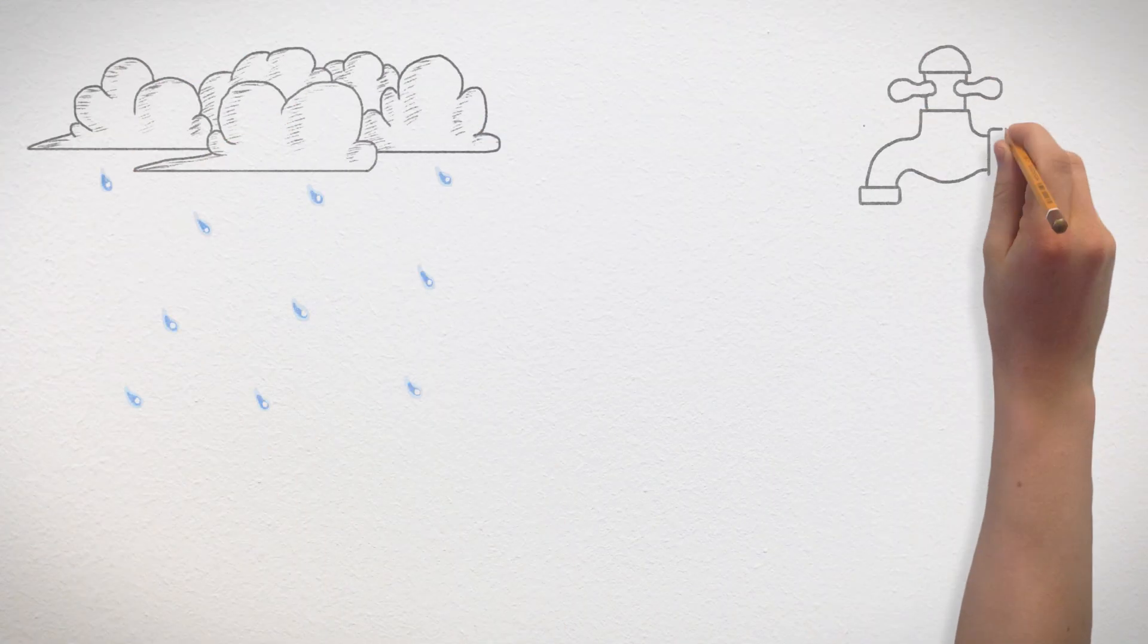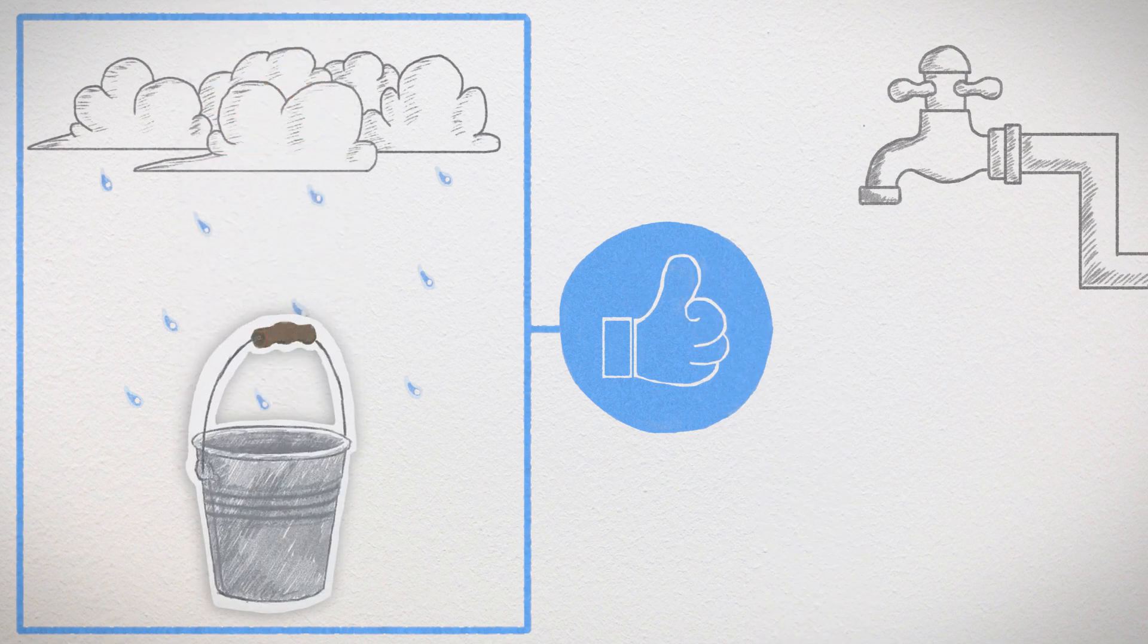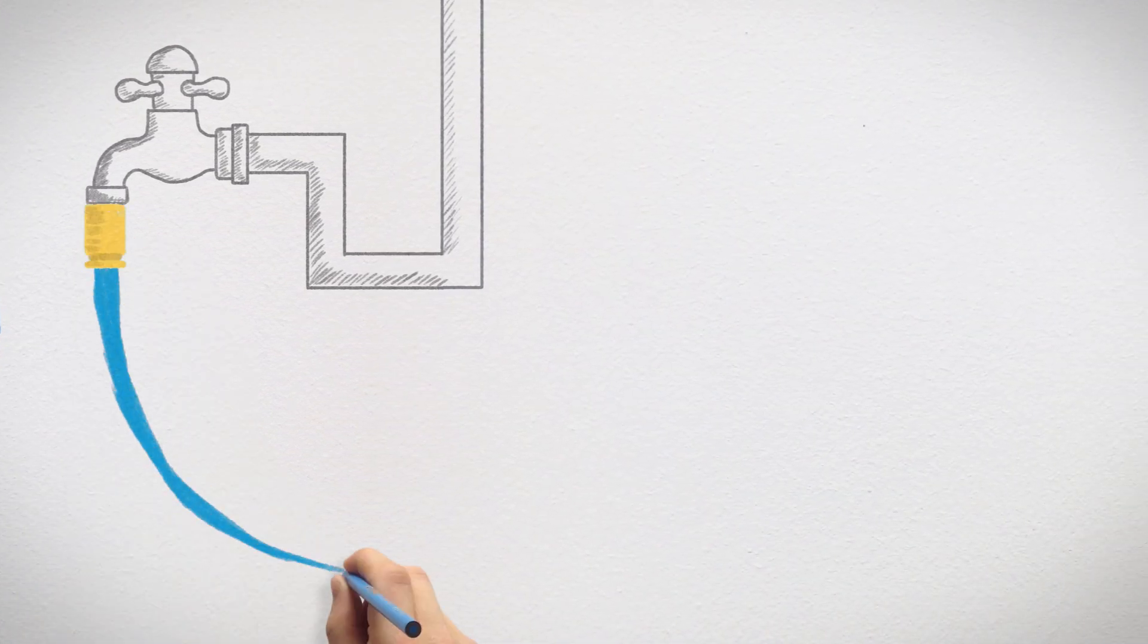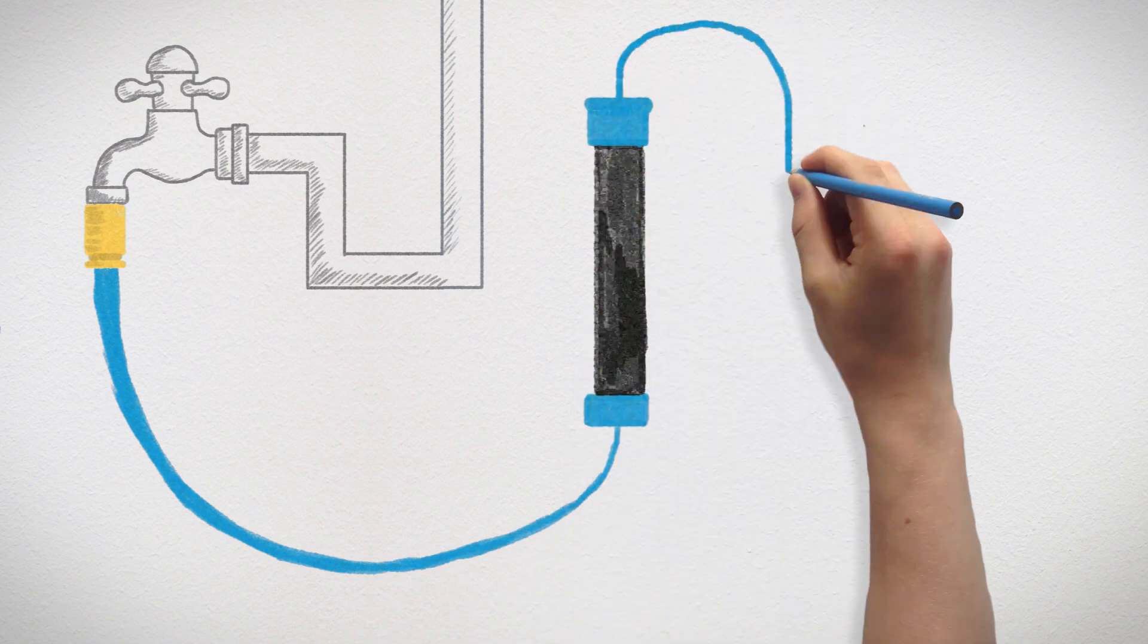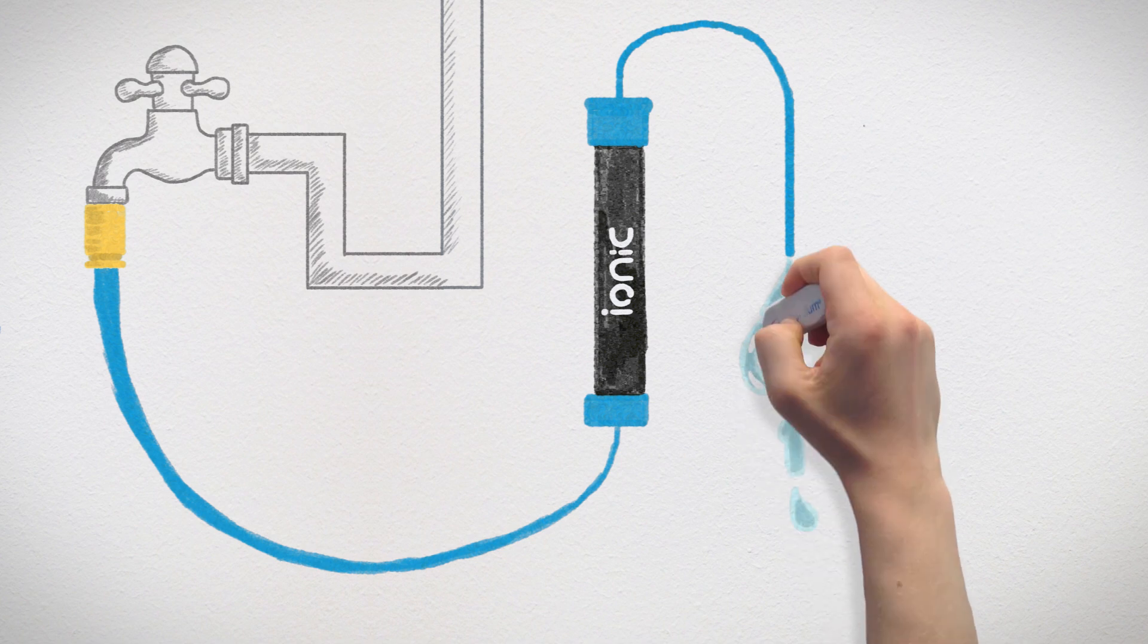Early experience showed that rainwater being purer than tap water cleaned better. Capturing rainwater is impractical, so the solution lay in treating tap water to improve its quality. But how pure does water need to be to ensure satisfactory cleaning results?